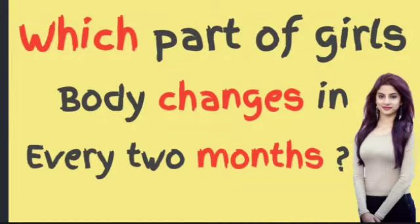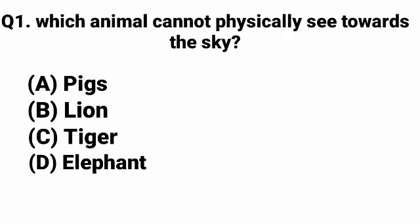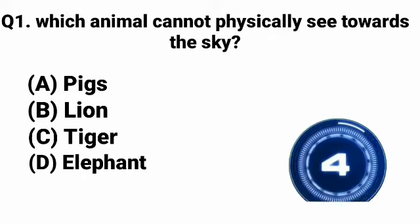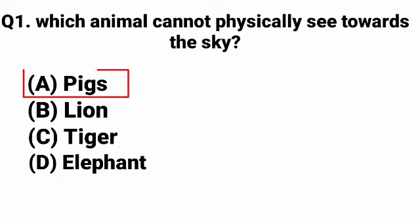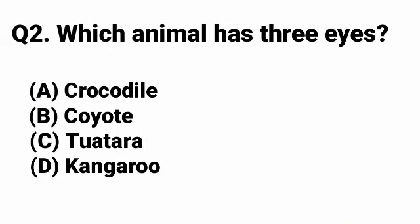Hello friend, welcome back to my YouTube channel GK Teach. Today we are going to discuss GK questions. So let's start. Question 1: Which animal cannot physically see towards the sky? Answer: Option A - Pigs.